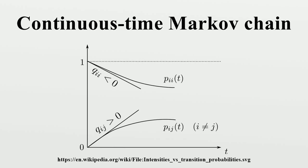In probability theory, a continuous time Markov chain is a mathematical model which takes values in some finite state space and for which the time spent in each state takes non-negative real values and has an exponential distribution. It is a continuous time stochastic process with the Markov property, which means that future behavior of the model depends only on the current state and not on historical behavior. The model is a continuous time version of the Markov chain model, named because the output from such a process is a sequence of states.